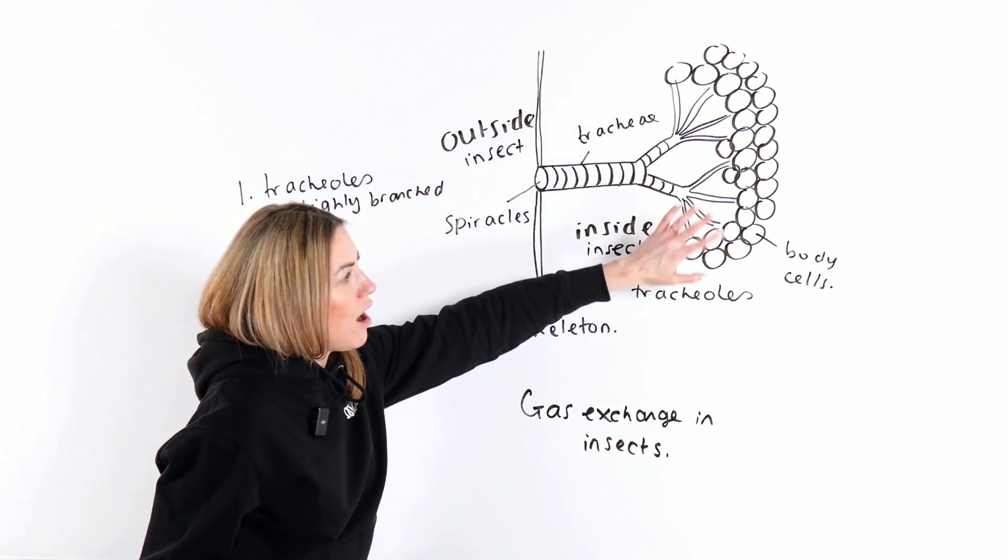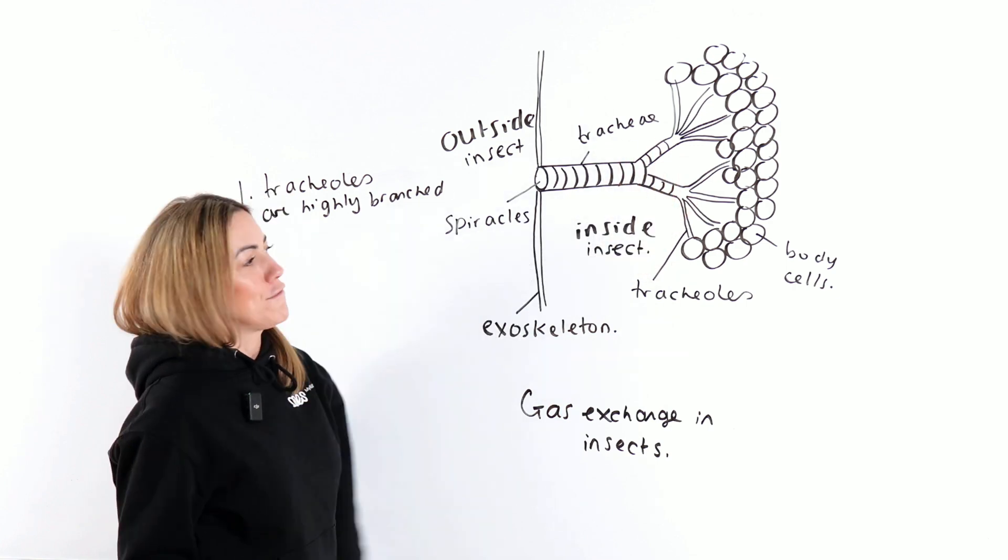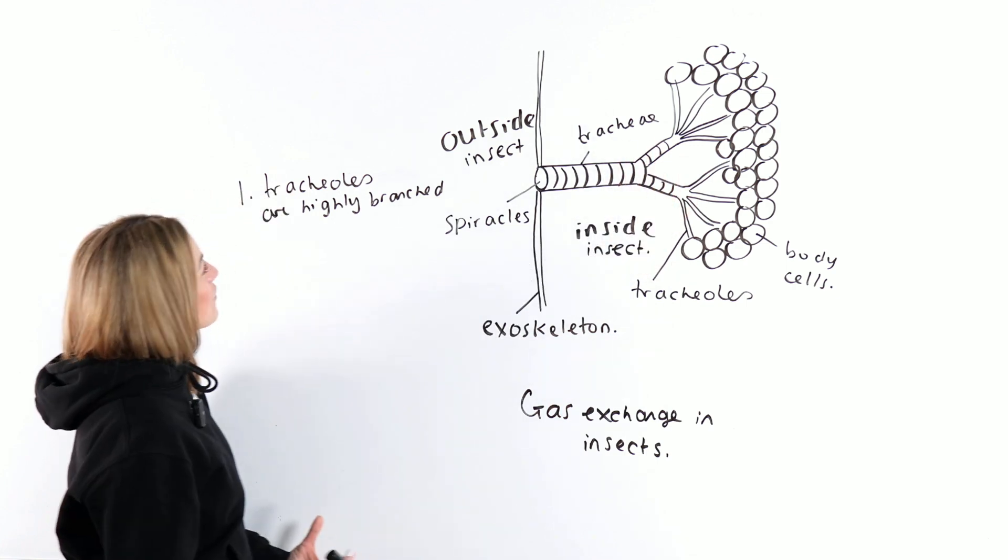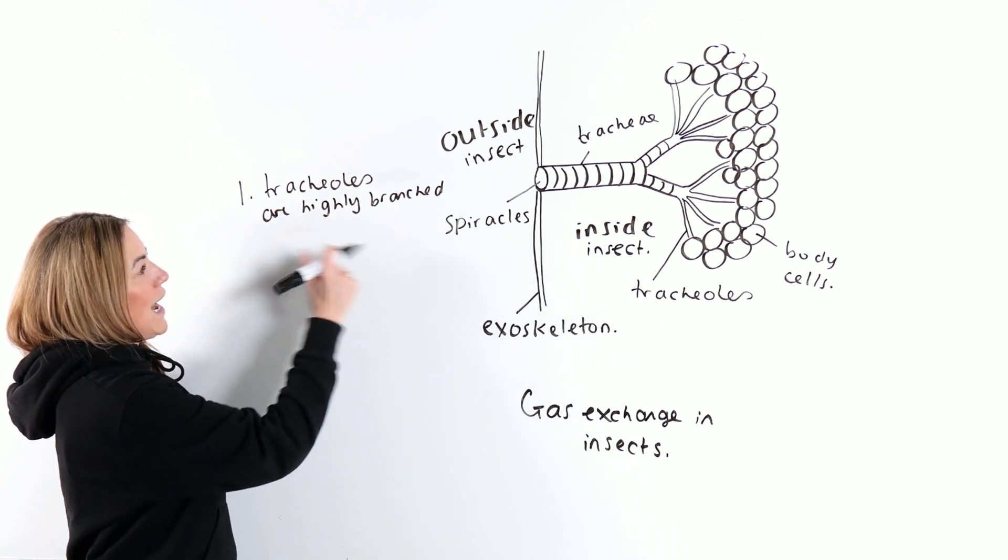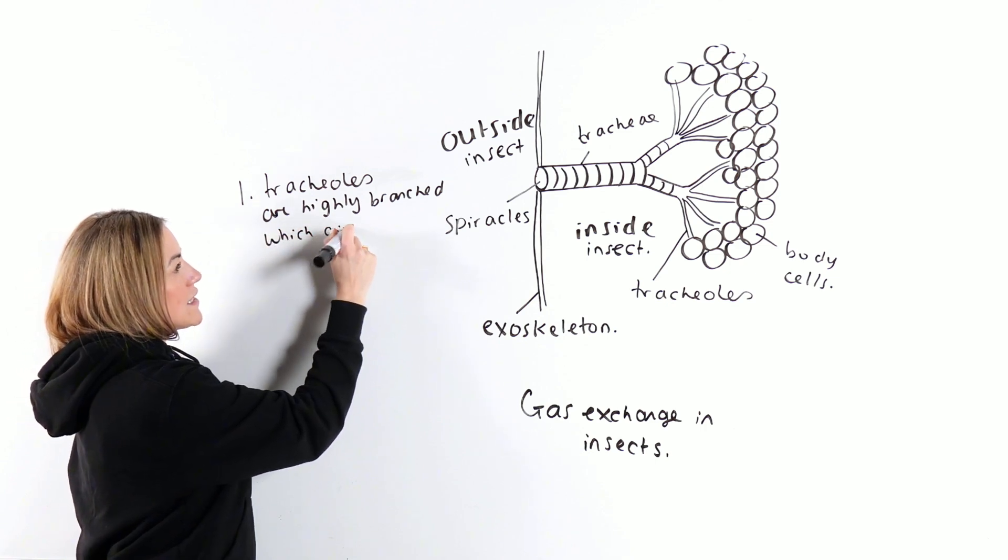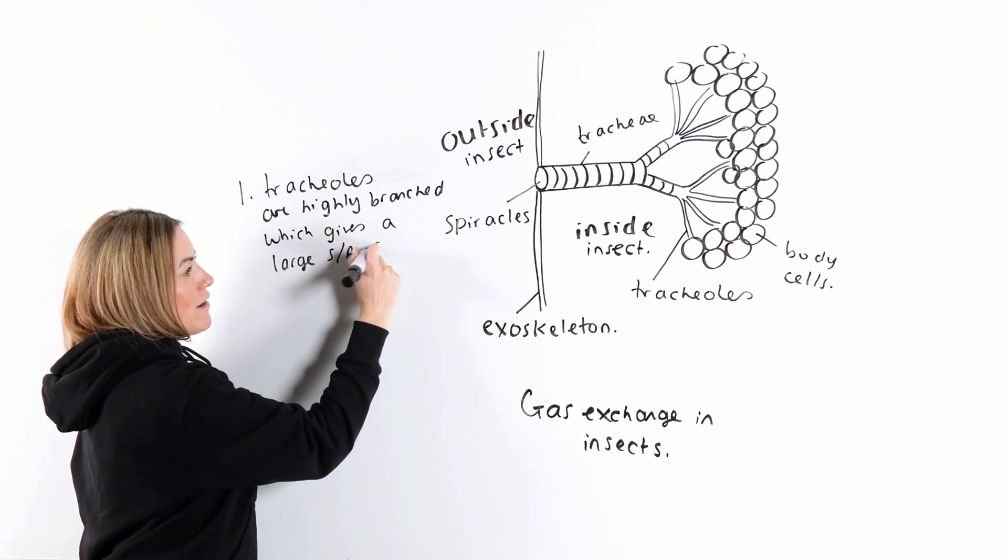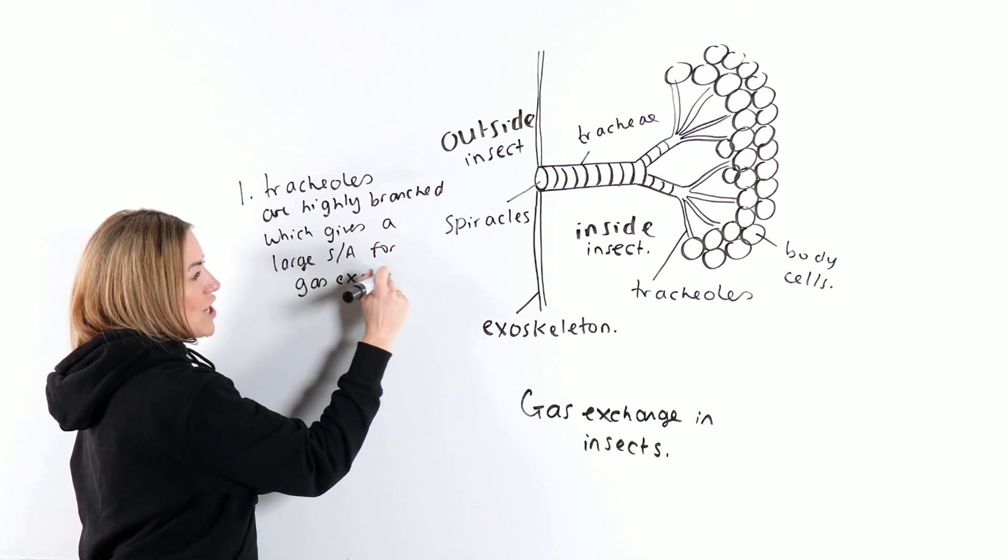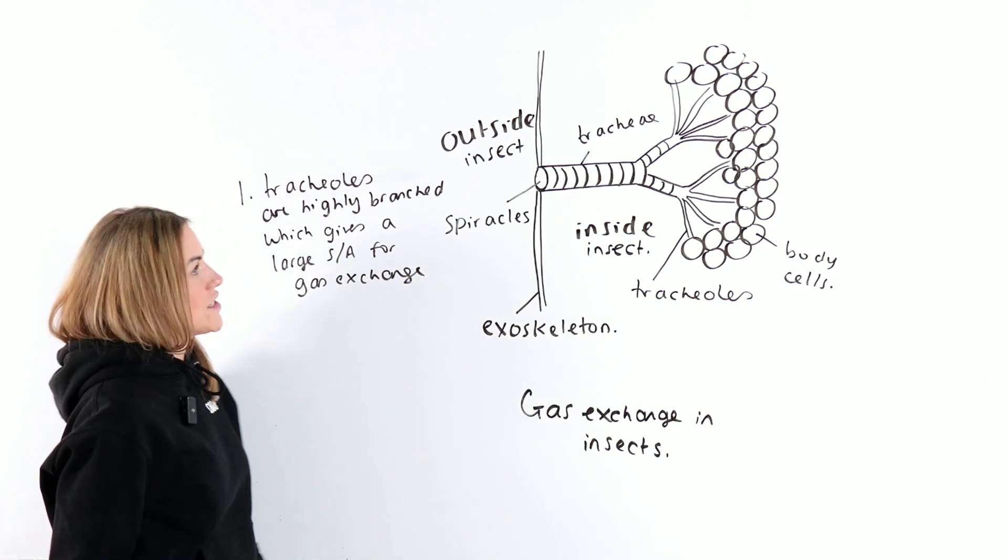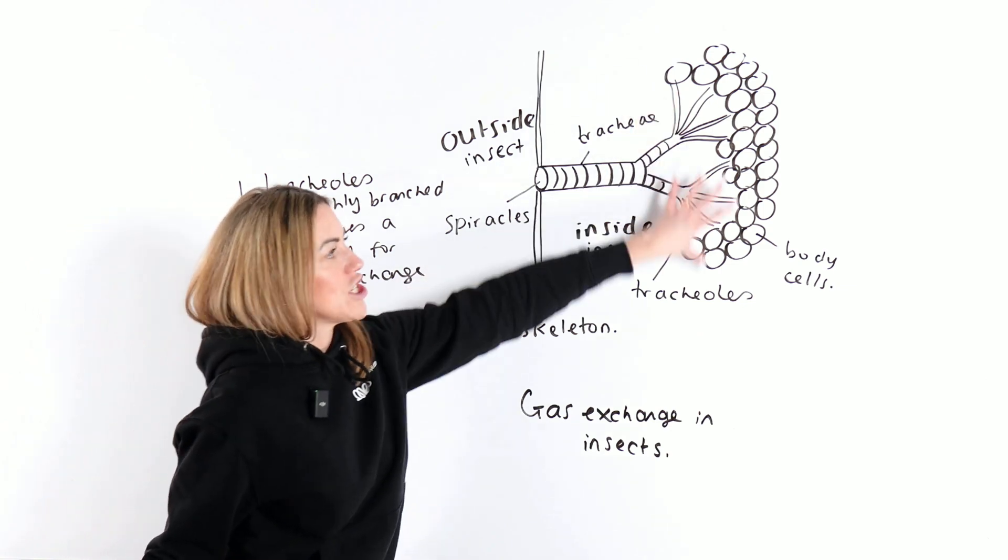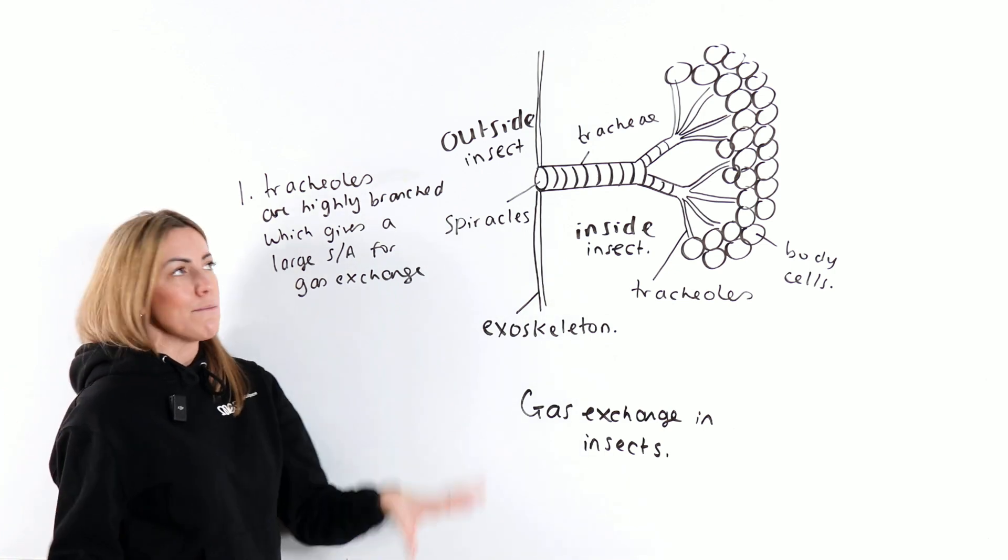The tracheoles are the finer branches of which there are many. There's a really big network of tracheoles. That's where we've got the highly branchedness going on. So the tracheoles are highly branched, which gives a large surface area for gas exchange. It's a bit like comparing it to the alveoli in our lungs with a large surface area.